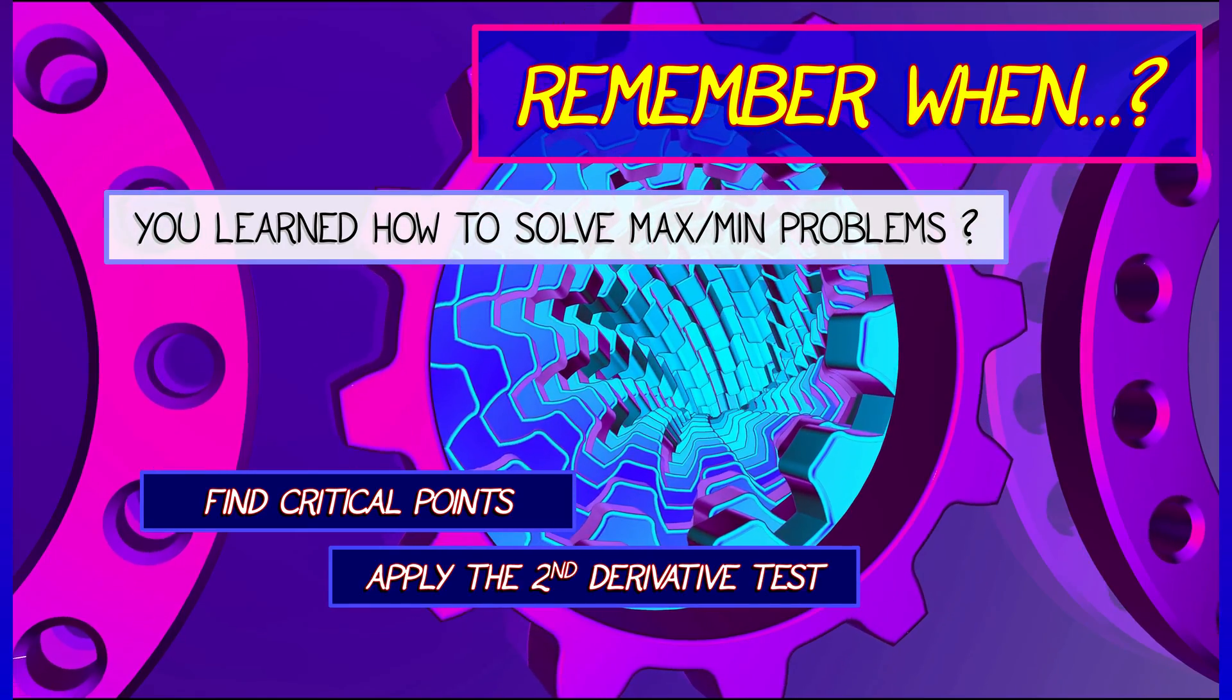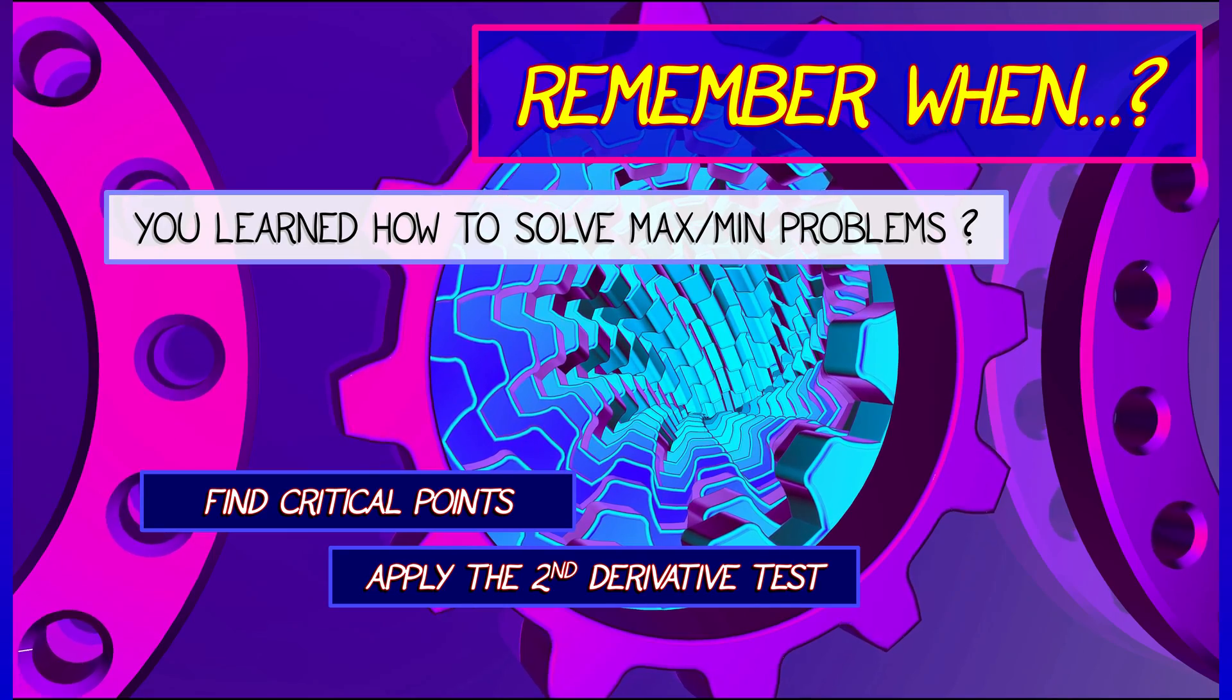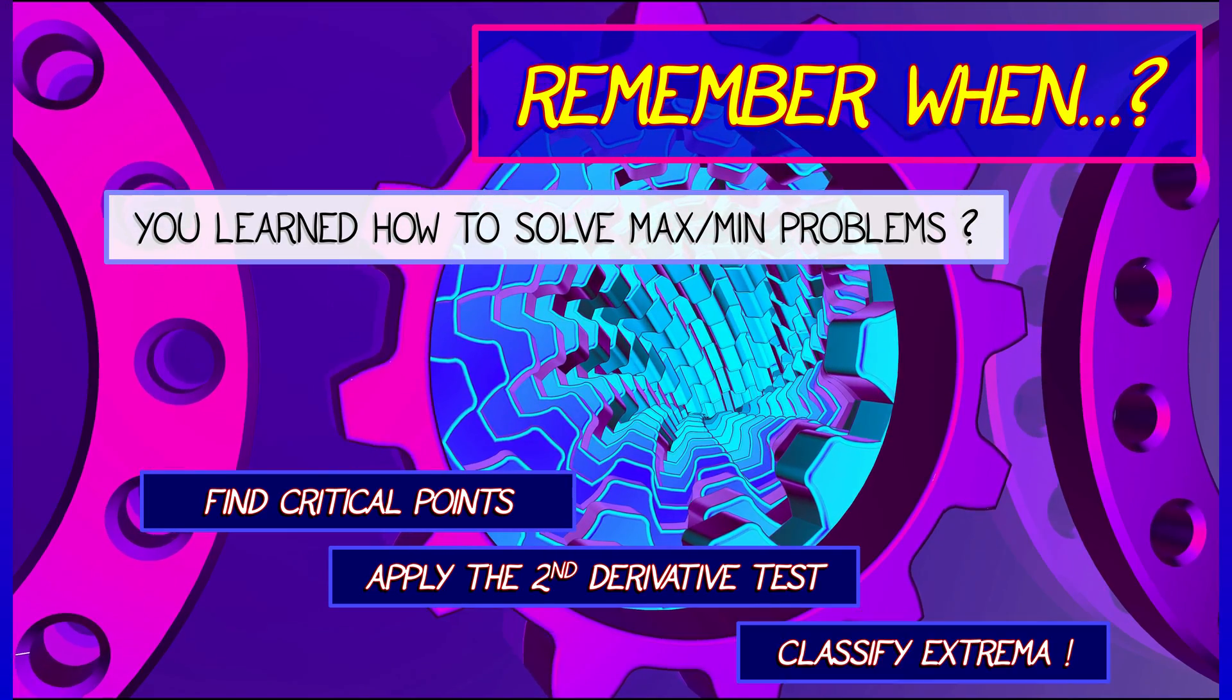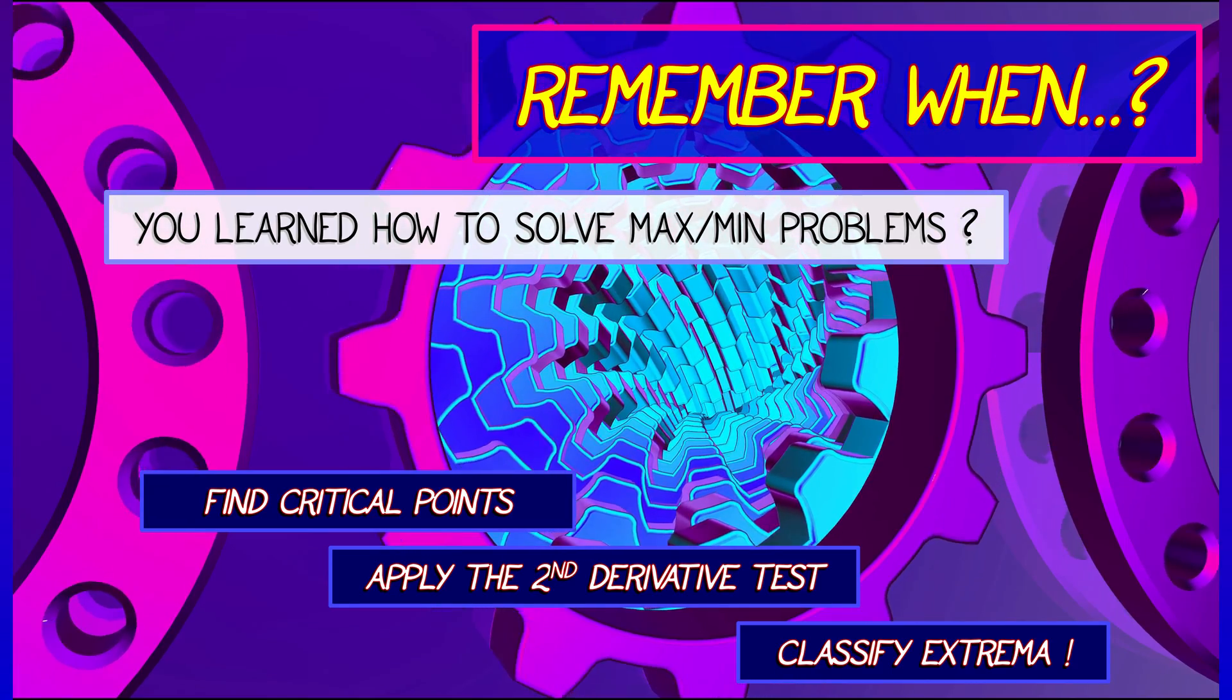You apply some kind of test like the second derivative test, something like that. And then you classify the critical points as being either maxes or mins or degenerate stuff.